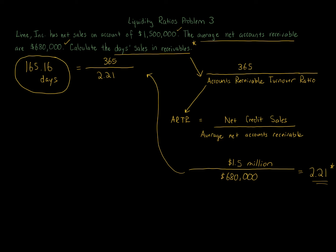So 165.16 days is our answer — the number of days sales in receivables, an estimate of the time accounts receivable have been outstanding, often compared to a company's credit terms. To summarize: we always use 365 over the accounts receivable turnover ratio, which is net credit sales over average net accounts receivable. We got 2.21 for the ARTR, then 365 divided by 2.21 gives us 165.16 days. That is how you calculate days sales in receivables, and we also calculated the accounts receivable turnover ratio along the way.